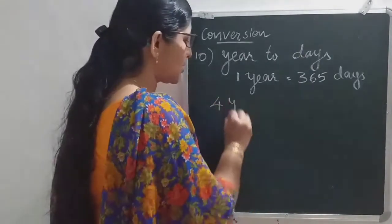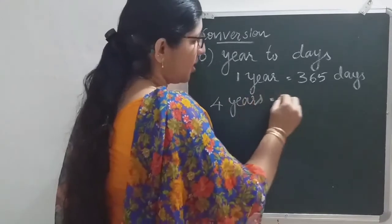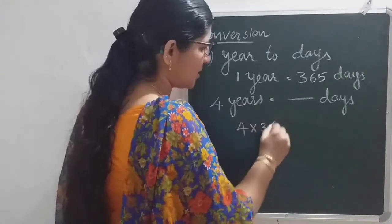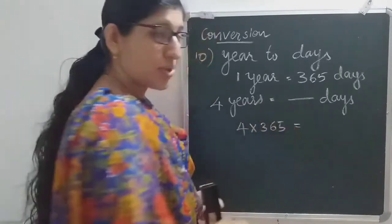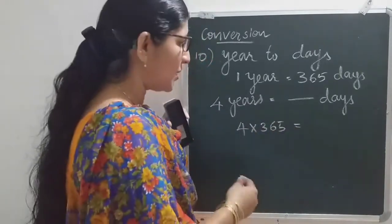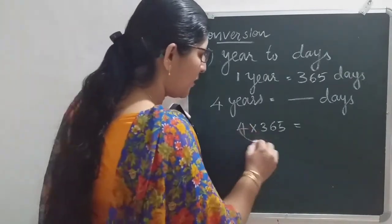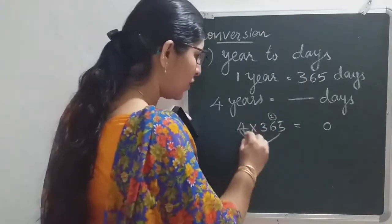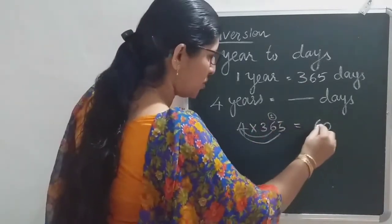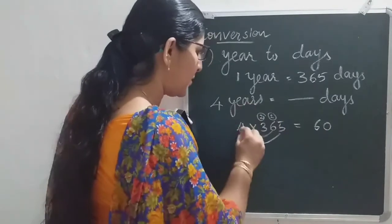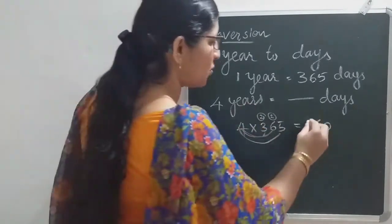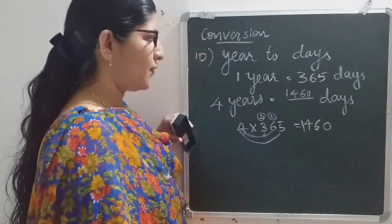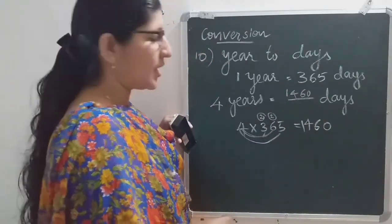If it is 4 years, how many days? 4 into 365. You can do horizontal method or vertical method of multiplication. 5 fours are 20, carry over; 4 sixes are 24 plus 2 is 26, carry over; 4 threes are 12 plus 2 is 14. So the answer is 1460 days. 4 years means 1460 days.